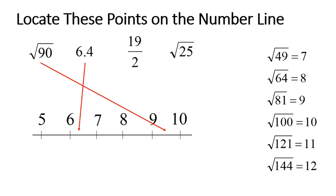The next point is 19 over 2. As we discussed, fractions mean division: 19 divided by 2 gives you 9.5, so it sits right there — 19 over 2 is almost the same value as the square root of 90, just about the same but not exactly. Finally, the square root of 25 equals 5 — that is a rational number, the square root of a perfect square.